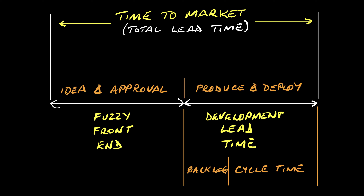The first phase is the time taken from the origin and crystallization of the idea through to approval for production, and the second is the actual production and delivery phase. The challenge with measuring the time taken for all this is in identifying when the idea first emerged. For this reason, the first phase is known as the fuzzy front end.